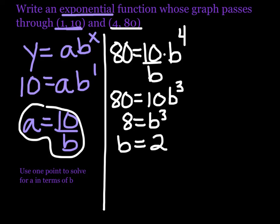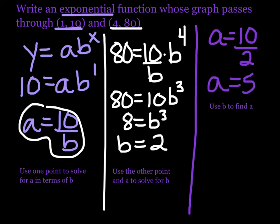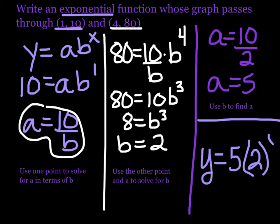So now that I know b, I can go back and get a. So then we're going to take a equals 10 over b, and now we know what b is, so it's 10 over 2. And now we know a is 5. And finally, we'll put it all together. y equals 5 times 2 to the x power.